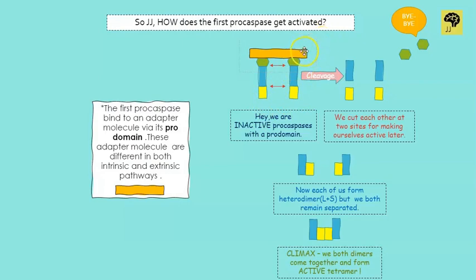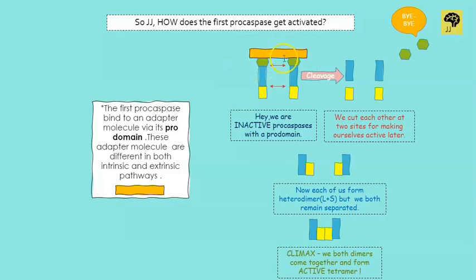Adapter proteins and pro-caspases are best friends, for two reasons. First, adapter proteins help recruit pro-caspases into the signaling pathway — they attach to something, and then pro-caspases attach to the adapter protein. Second, adapter proteins bring two pro-caspases into close proximity, which is necessary for cleavage. To attach to the adapter protein, pro-caspases use a region called the pro-domain — shown here in green. The large subunit is in blue and the small subunit is in yellow. When two pro-caspases are in close proximity, they cleave at two different sites.